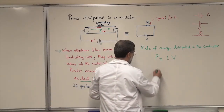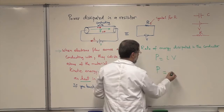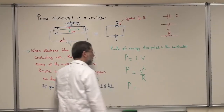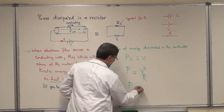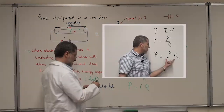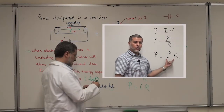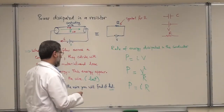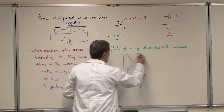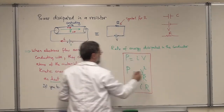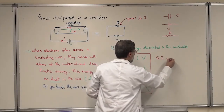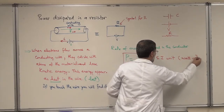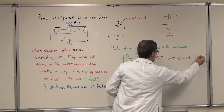This equation can be written differently by using Ohm's law. Since I equals V over R, you can write P as V squared over R. And by replacing V with IR, you get I squared R. So you have three different equations for power dissipated: P = IV, P = V²/R, and P = I²R. The SI unit for this power is the watt.